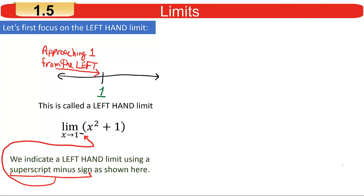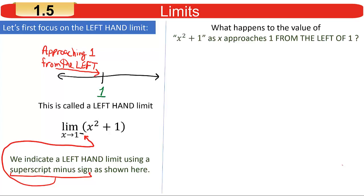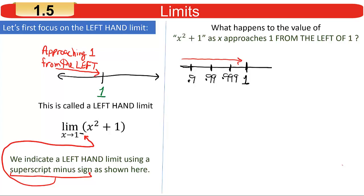Let's start with the left-hand limit. I'm interested in what happens to x squared plus 1 as x approaches 1 from the left. Think of values less than 1 and getting closer and closer to 1 — try something like 0.9, then 0.99, then 0.999, and so on. If you plug in 0.9 and compute 0.9 squared plus 1, you'll get about 1.810.